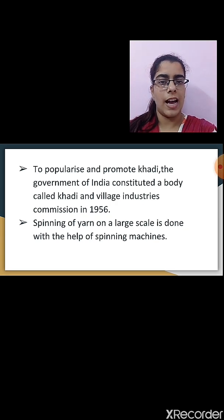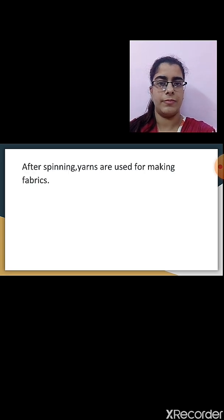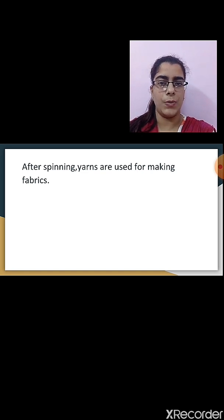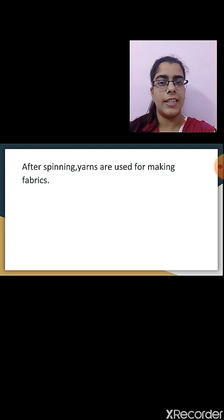Spinning of yarn on a large scale is done with the help of spinning machines. After spinning, yarns are used for making fabrics. So the process is: first we get the fibers, then fibers are converted into yarn by the process of spinning, and then these yarns are used for making fabric.